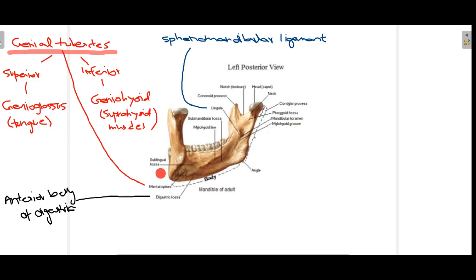Another structure appreciated through the posterior view is the mental spines, also known as genial tubercles — both terms describe the same two elevations and can be used interchangeably. They are divided into superior and inferior mental spines. On the superior mental spine, the genioglossus muscle is attached, which is one of the main muscles of the tongue. On the inferior mental spine, the geniohyoid muscle is attached, which is part of the suprahyoid muscles.